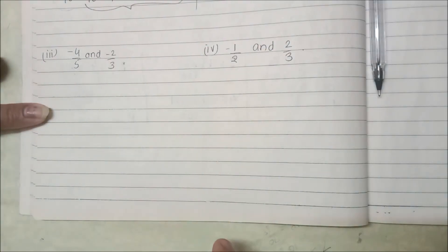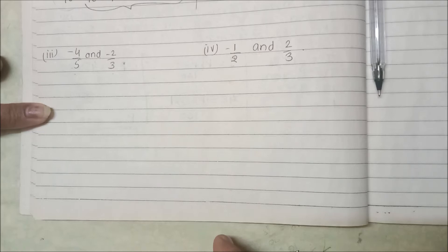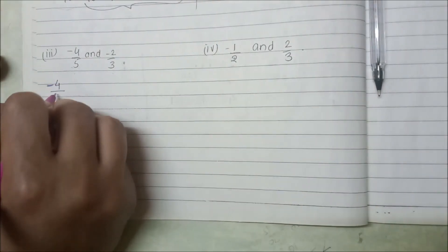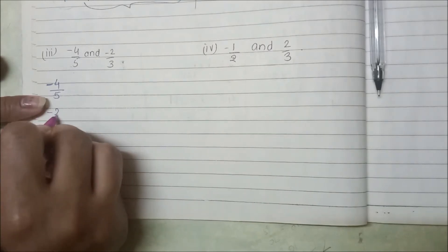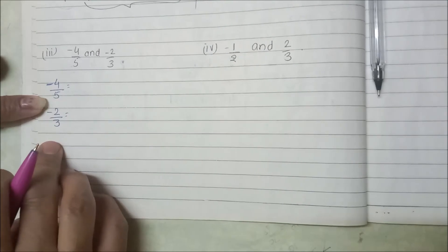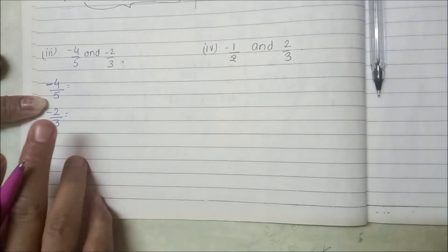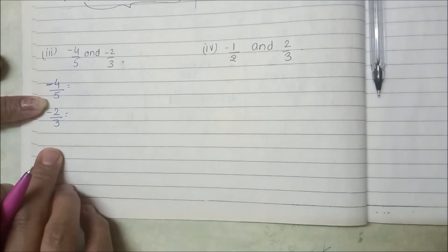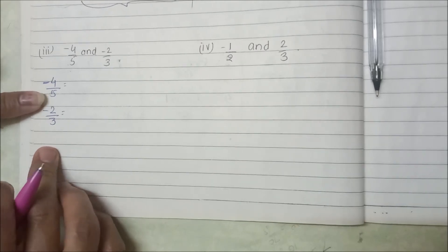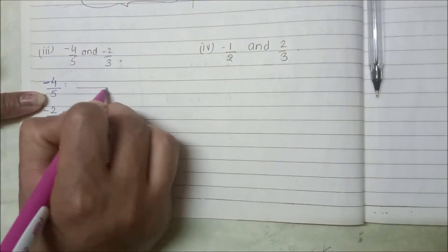What we have done before is we gave individual numbers like minus 1 and 0, and we did LCM to make the denominators the same. We have to do the same here — make the denominators the same. This is minus 4 by 5 and minus 2 by 3. To remove 5 rational numbers, we have to multiply both. 5 and 3 gives us 15, so 15 will become the LCM. We need to multiply both in the denominator.